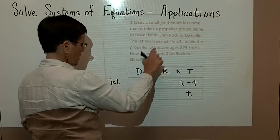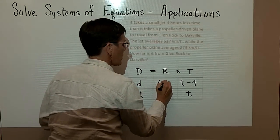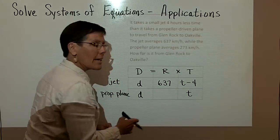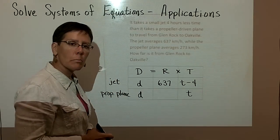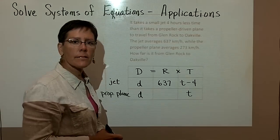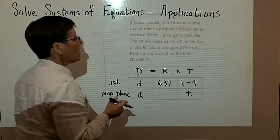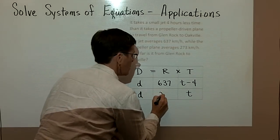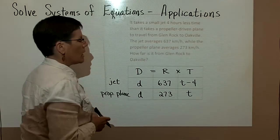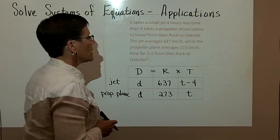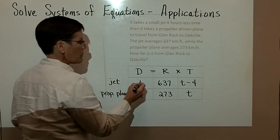The jet averages a rate of 637. This column is not a difficult one for this problem. It is more difficult when there's wind and currents and planes and boats. But this one, they just downright tell you what the speeds are of these two particular vehicles, the jet plane and the propeller plane.